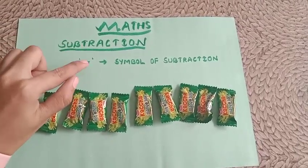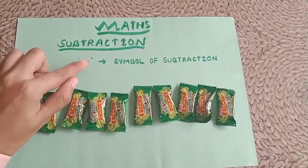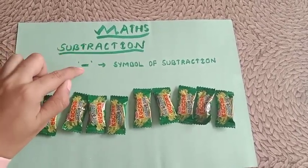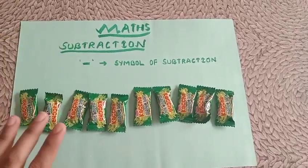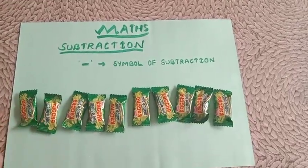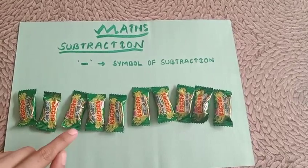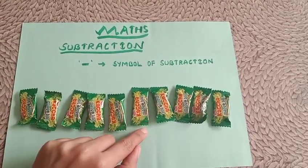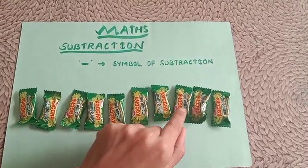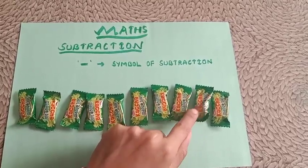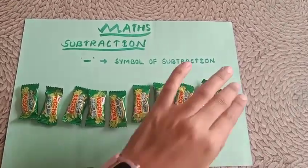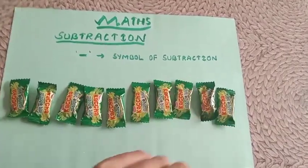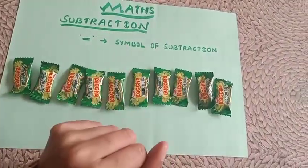This is the symbol of subtraction. Now, how many toffees do I have? I have 1, 2, 3, 4, 5, 6, 7, 8, 9, and 10. Total I have 10 toffees.